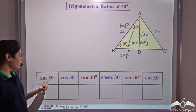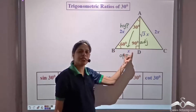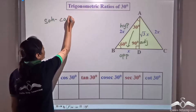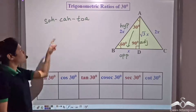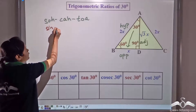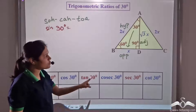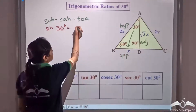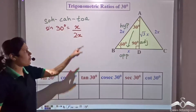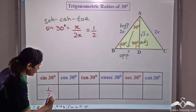Now we find sine of 30. Using SOHCAHTOA, sine equals opposite over hypotenuse. So sin 30 = opposite of 30° angle / hypotenuse = x / 2x = 1/2. Therefore sin 30 equals 1/2.